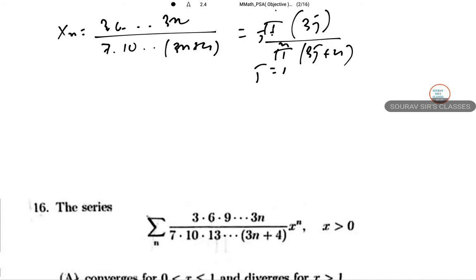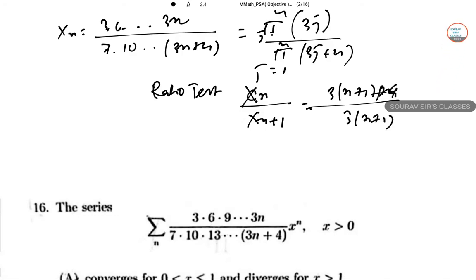Now applying the ratio test: xn divided by x(n+1) equals (3n+3+4) divided by (3 times (n+1)), which tends to 1 as n tends to infinity.